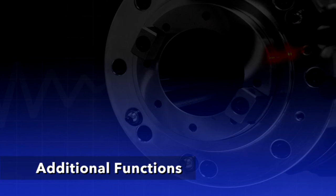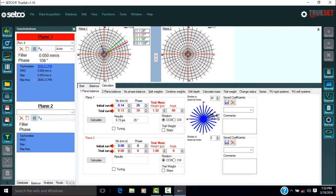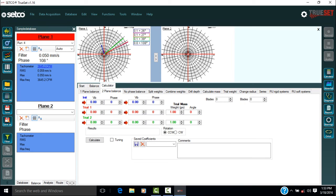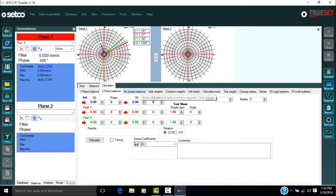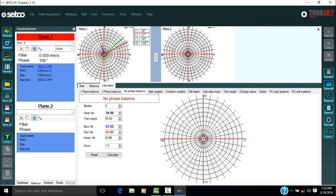Several other tabs are available for other functions. The second tab is two-plane balance. This is used when balancing in two planes, i.e. front and rear. This 3D image is for reference on proper orientation and perspective. The third tab is no-phase balance, which is used if the tachometer cannot be used. This method is less accurate.